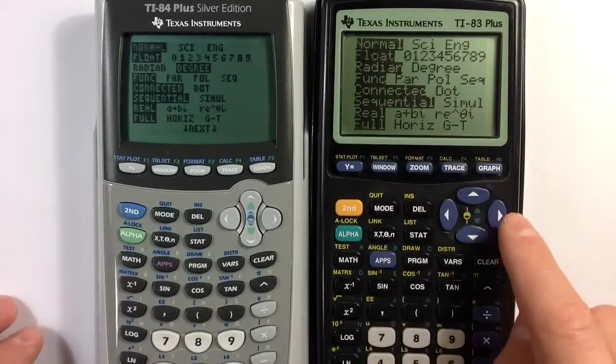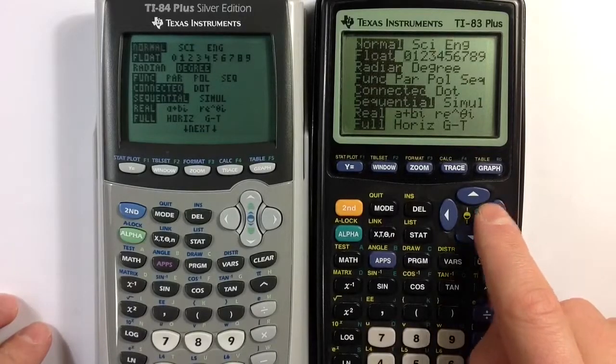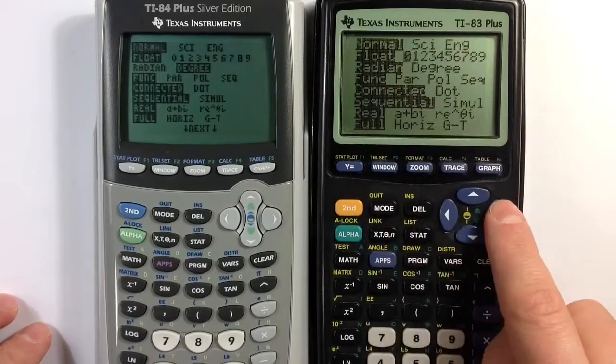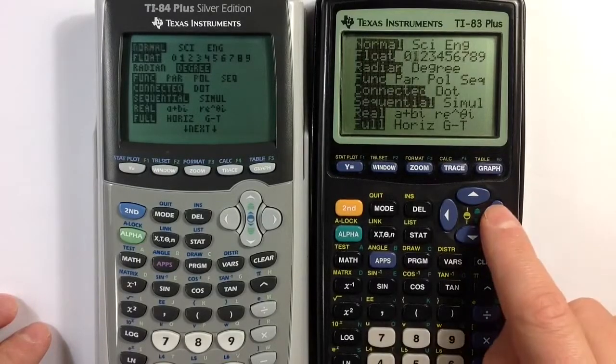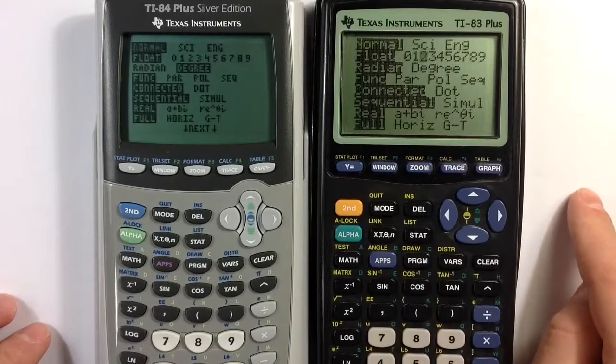And then if you want to round to whole numbers you would choose zero, and then one decimal point, the tenths place, would be one, and to the hundredths place would be two, and so on.